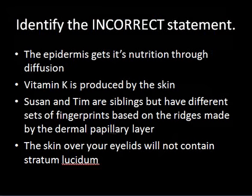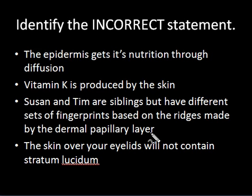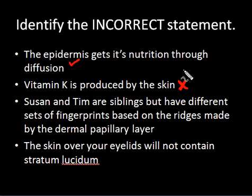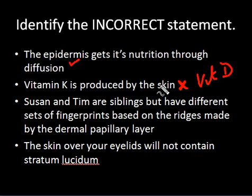Let's look at the next question, which asks you to identify the incorrect statement. The first statement says the epidermis gets its nutrition through diffusion — this is true because the epidermis is epithelium, which is always avascular. The second statement says vitamin K is produced by the skin — this is false; it is vitamin D, actually a precursor of vitamin D, that is produced in the skin, not vitamin K. So this is the incorrect statement, but you must always go down and look at the other choices.